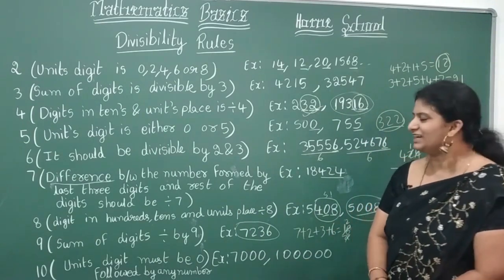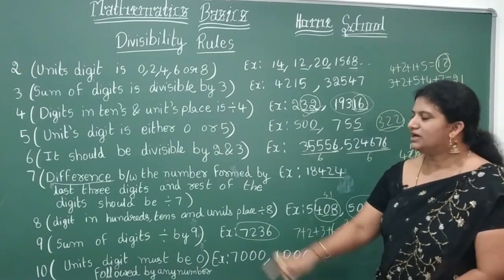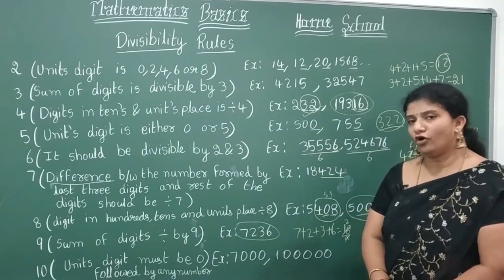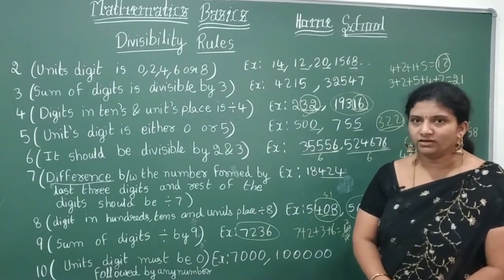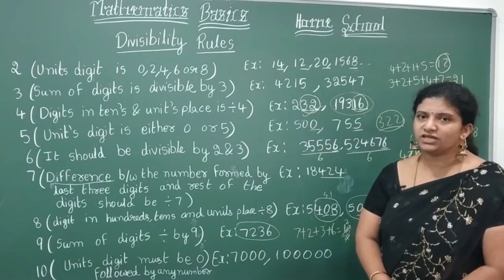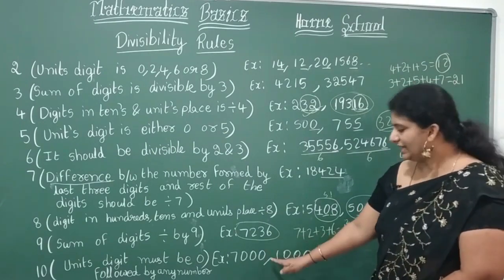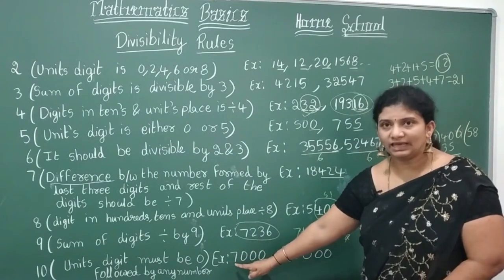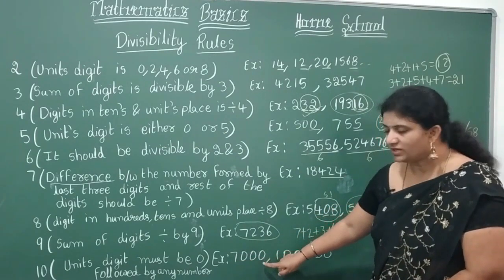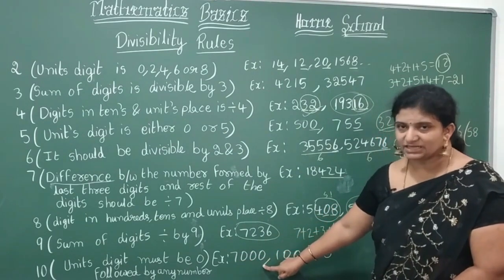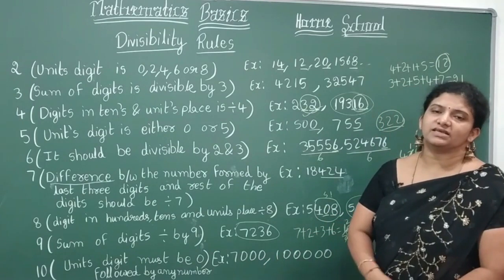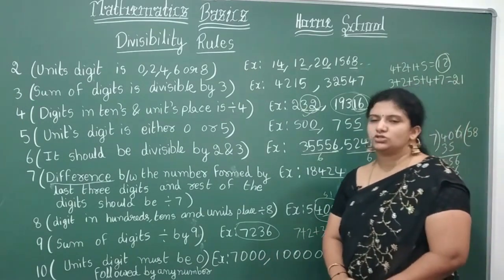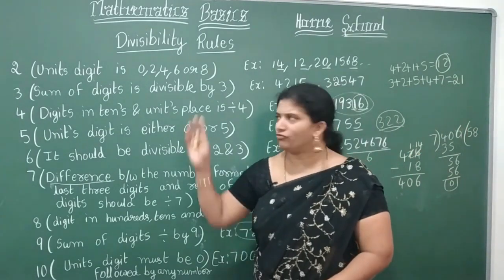Divisibility by 10: the units digit must be 0, followed by any other digits. If the units digit is zero, we can say the number is divisible by 10.